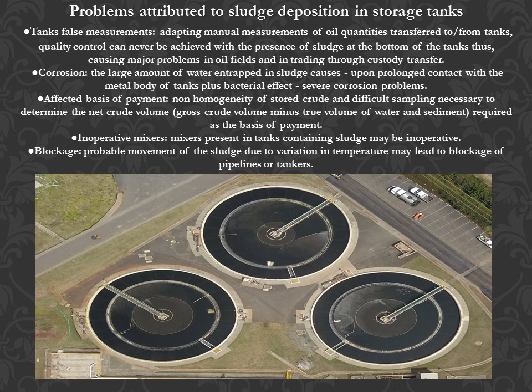Pump malfunctioning: Increased pump maintenance due to impeller erosion and blockage. Tanks false measurements: Attempting manual measurements of oil quantities transferred to and from tanks — quality control can never be achieved with the presence of sludge at the bottom of the tanks, causing major problems in oil fields and in trading through custody transfer. Corrosion: The large amount of water entrapped in sludge causes, upon prolonged contact with the metal body of tanks plus bacterial effect, severe corrosion problems. Inoperative mixers and probable movement of sludge due to temperature variation may lead to blockage of pipelines or tankers.